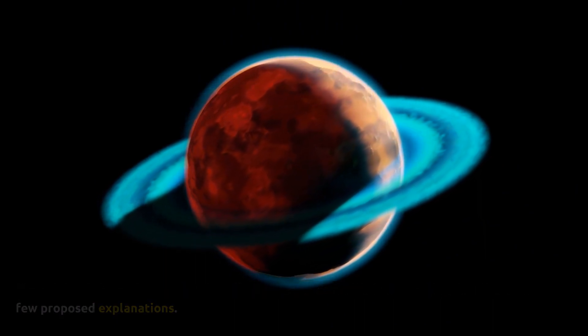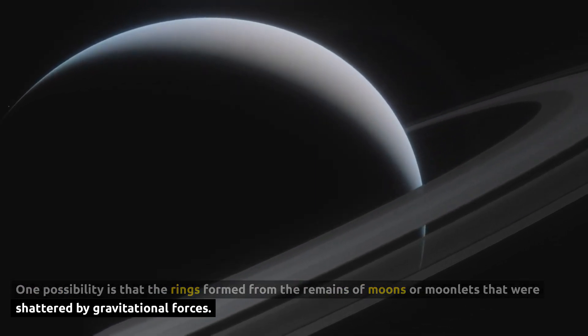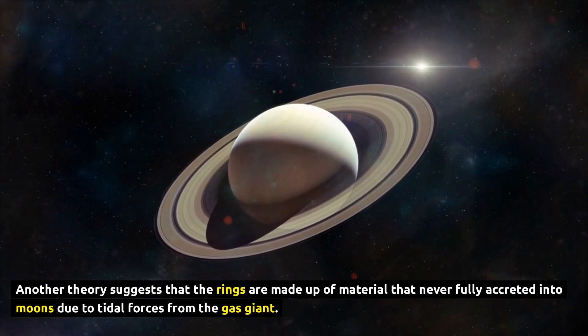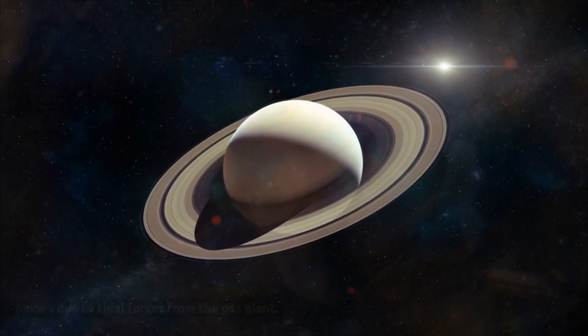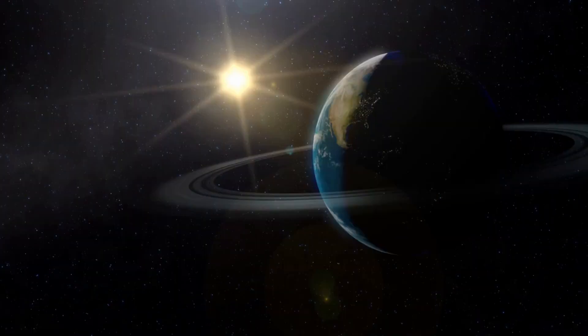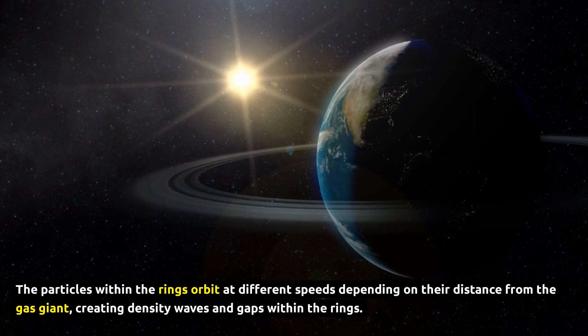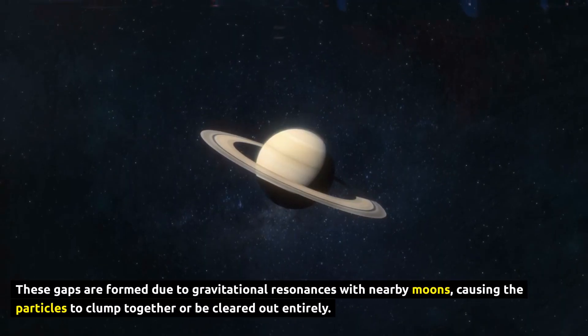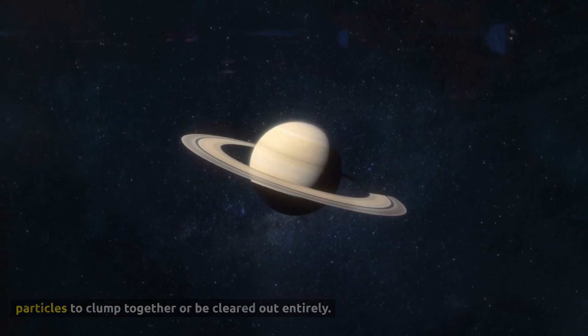The origin of these ring systems is still a subject of scientific investigation, but there are a few proposed explanations. One possibility is that the rings formed from the remains of moons or moonlets that were shattered by gravitational forces. Another theory suggests that the rings are made up of material that never fully accreted into moons due to tidal forces from the gas giant. The intricate dynamics of the ring systems continue to fascinate scientists. The particles within the rings orbit at different speeds depending on their distance from the gas giant, creating density waves and gaps within the rings. These gaps are formed due to gravitational resonances with nearby moons, causing the particles to clump together or be cleared out entirely.